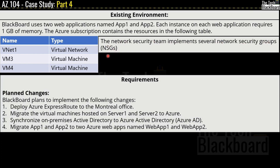Moving to the requirements section, under planned changes, Blackboard plans to: deploy Azure ExpressRoute to the Montreal office; migrate the virtual machines hosted on Server1 and Server2 to Azure; synchronize on-premises Active Directory to Azure Active Directory; and migrate App1 and App2 to two Azure web apps named WebApp1 and WebApp2.